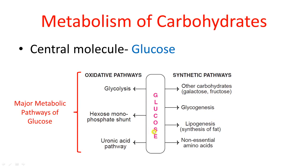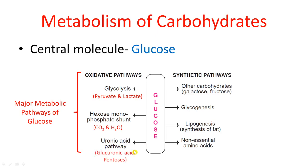Looking at the oxidative pathways of glucose: first, glucose can undergo glycolysis, where it gets converted into pyruvate and lactate. Second, glucose can get involved in the hexose monophosphate shunt, where it is ultimately converted into carbon dioxide and water. Third, glucose can undergo the uronic acid pathway, where the final products are glucuronic acid and pentoses.